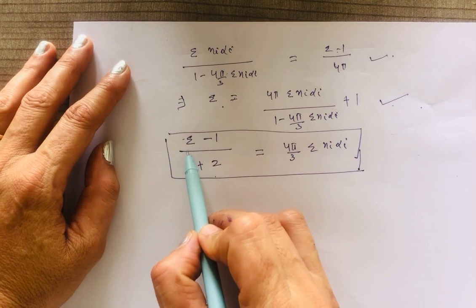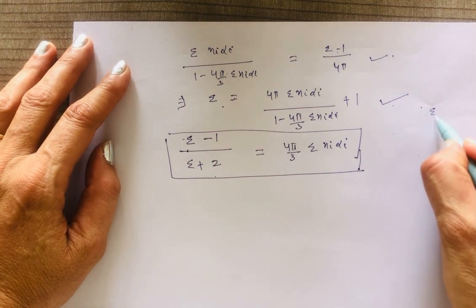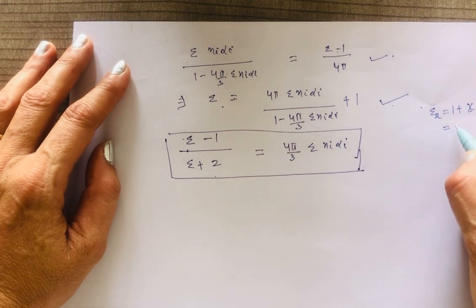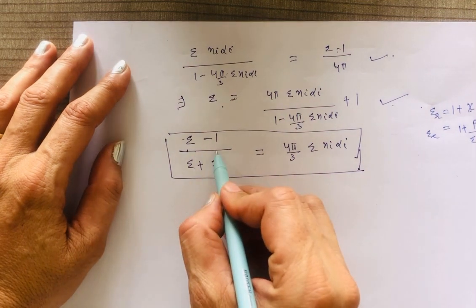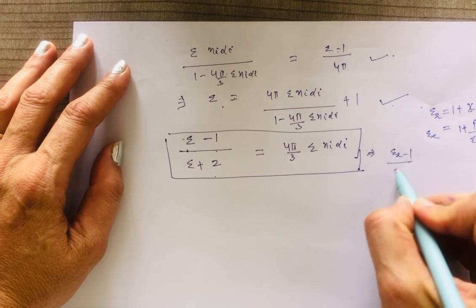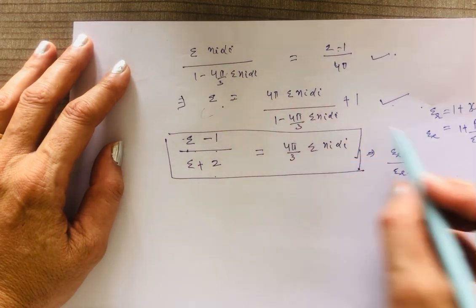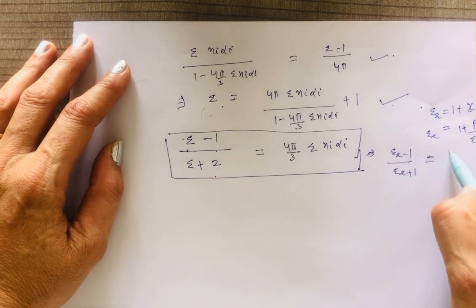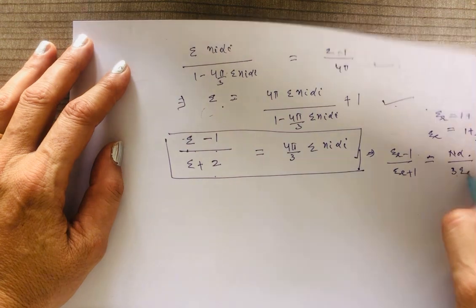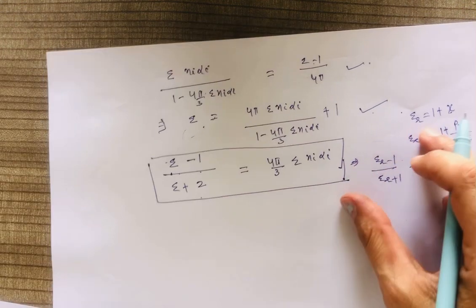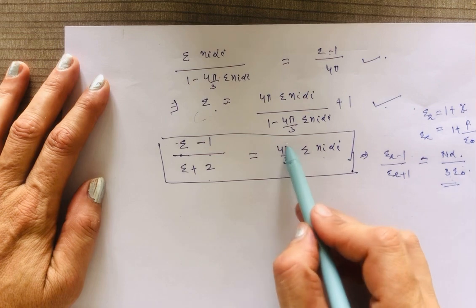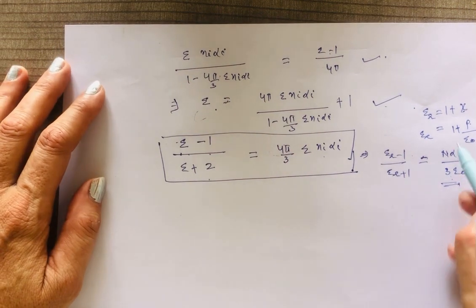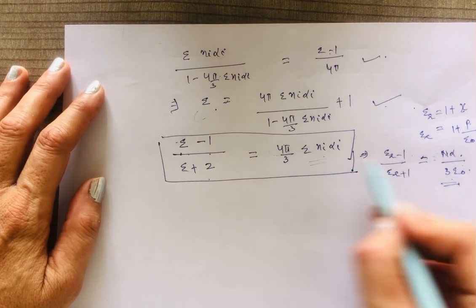If you are using epsilon_r, then using epsilon_r = 1 + P/epsilon_0, the relation becomes (epsilon_r − 1)/(epsilon_r + 2) = N·α / (3·epsilon_0). When you put i=1 to 1 for a single type of atom, you get N·α/(3·epsilon_0). Instead of 4π, you get 1/epsilon_0. You can write the summation Σ N_i α_i as simply N·α for a single type of atom.